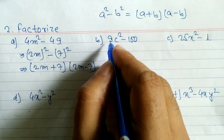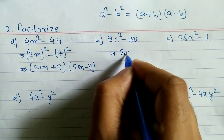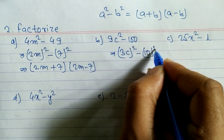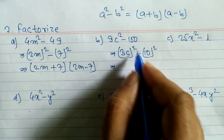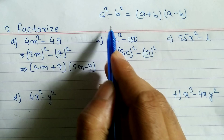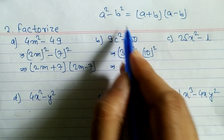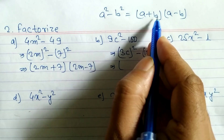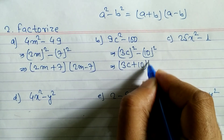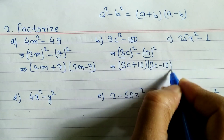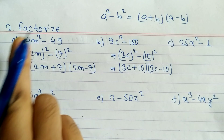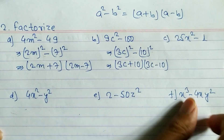For problem b: 9c² - 100. The square root of 9 is 3, so we write (3c)², and the square root of 100 is 10, so we write (10)². This is in the form a² - b², so with a = 3c and b = 10, we get (3c + 10)(3c - 10).